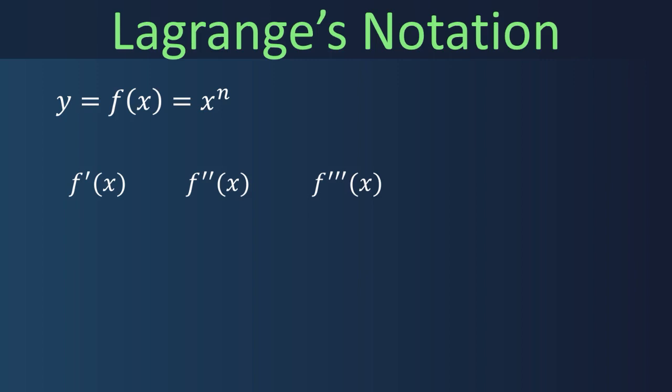Lagrange's notation is also called prime notation due to use of the prime sign. But what about fourth or higher derivatives? It is denoted using either roman superscript or natural number enclosed in parenthesis. So, the nth derivative is denoted by f⁽ⁿ⁾(x) with n as superscript of f.